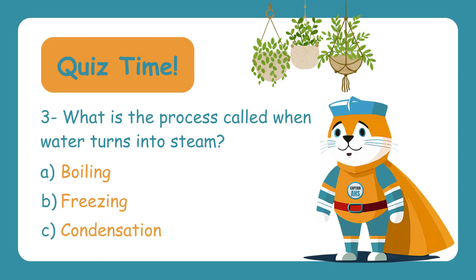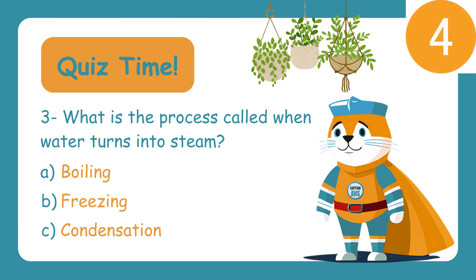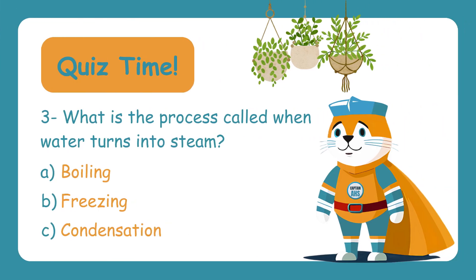What is the process called when water turns into steam? A, boiling! B, freezing! C, condensation! When water gets heated enough to form steam, it's called boiling! That's when water changes from a liquid to a gas.